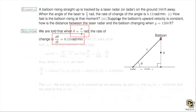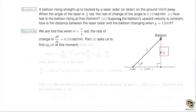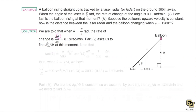Cataloging the information: we're given theta = π/4 radians and d theta/dt = 0.13 radians per minute. The question asks 'how fast is the balloon rising' — the word 'how fast' tells us it's asking for a derivative. The height is given by y, so we want dy/dt. This cataloging of what you're given and what you're trying to find is to me the most important part of a related rates problem.